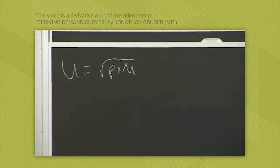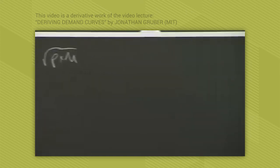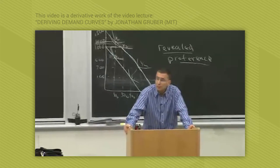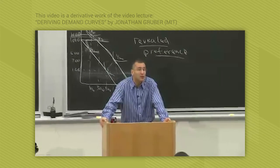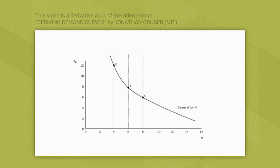Now, armed with that, we can draw a demand curve. Because what have we done? We've just given you three different prices for movies and three different quantities of movies you choose. When the price of movies is $8, that's point A in the middle, you choose six movies. When the price of movies rises to $12, your demand for movies falls and you only choose four movies. When the price of movies falls to $6, you choose eight movies. Thus the demand curve. And we're done. That's where demand curves come from.